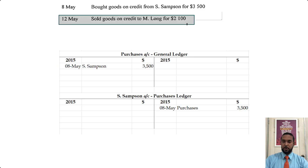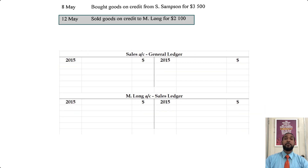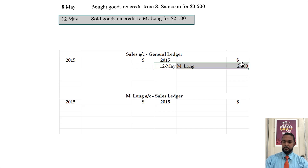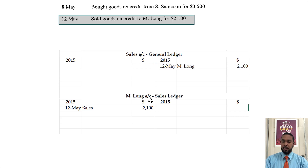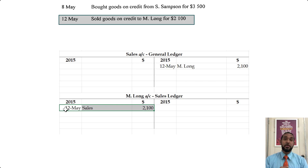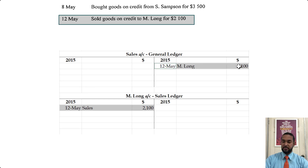On the next transaction, we sold goods on credit to M. Long for $2,100. Value is coming from us and going to the debtor, so you credit the sales account and debit the debtor. You also credit the sales account because sales is a revenue — when you make a sale you earn revenue. The debtor is an asset and the asset is increasing, so you debit to record the increase in the asset.